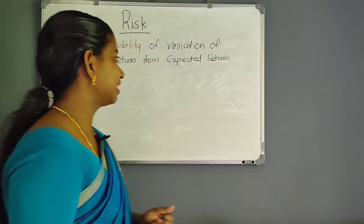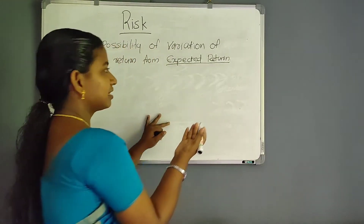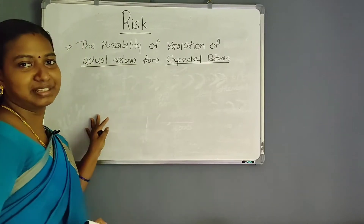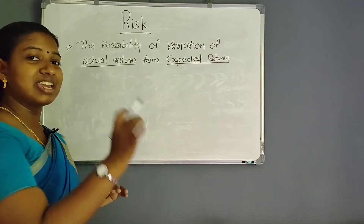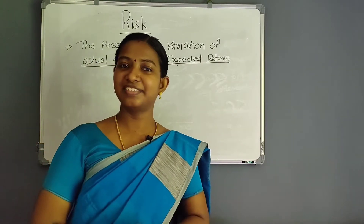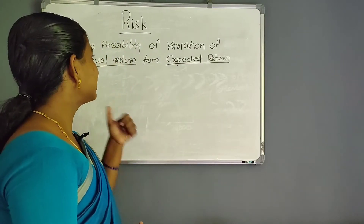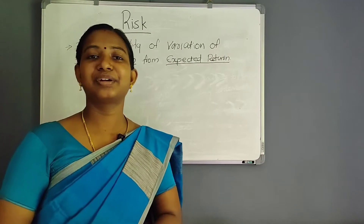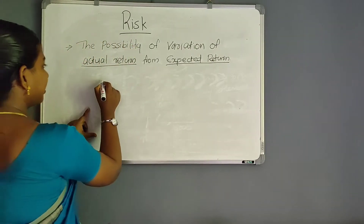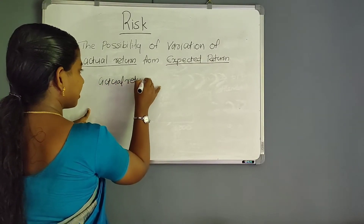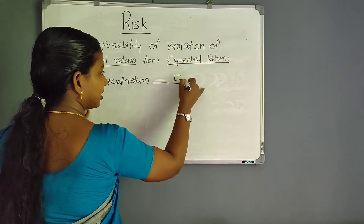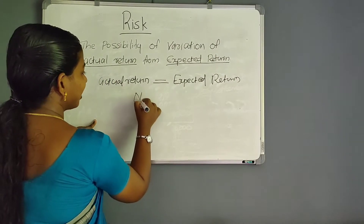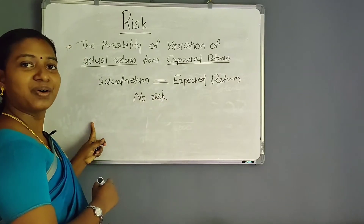What is the expected return? There is expected return and actual return — also called realizable return. Risk is the probability or the possibility of variation of actual return from expected return. If the actual return equals the expected return, there is no risk.